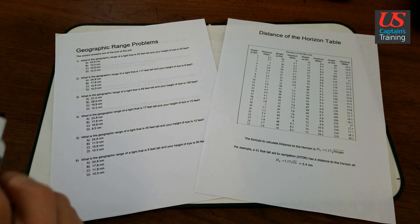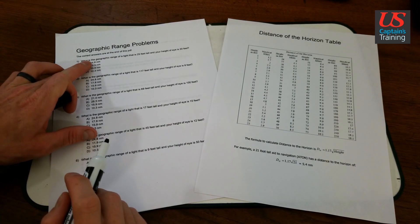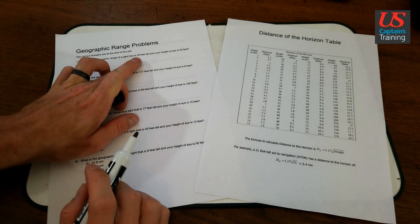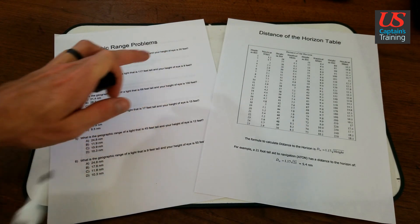Geographic Range Problem 1. What is the geographic range of a light that is 25 feet tall and your height of eye is 30 feet?